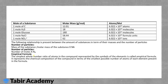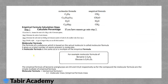Empirical formula is the simplest whole number ratio of atoms in a compound, represented by the symbols of the elements. It represents the chemical composition of the compound using the smallest possible number of atoms of each element. For example, the molecular formula C₂H₄ simplifies to CH₂. C₁₁H₂₂O₁₁ simplifies with a common factor of 11 to give CH₂O. Similarly, C₂₅H₅₀ simplifies to CH₂.